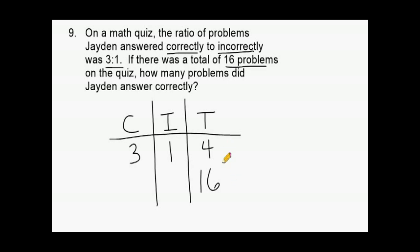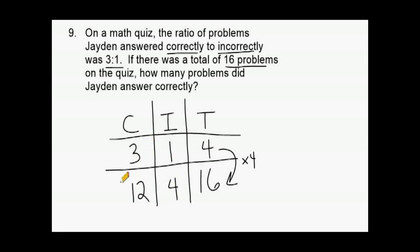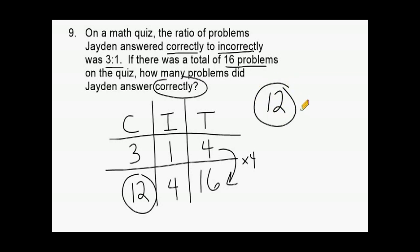We need to determine by what factor the total increased — 4 gets 4 times bigger to reach 16, so we multiply both 3 and 1 by 4. One times four is 4 and three times four is 12. So out of 16 total problems, Jaden correctly answered 12 and incorrectly answered 4. The problem asks how many he answered correctly, so the answer is 12 problems.